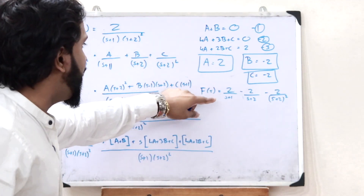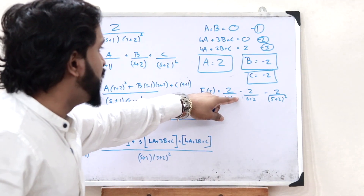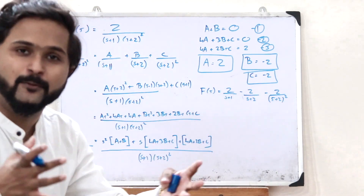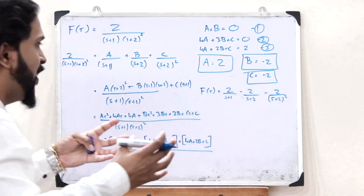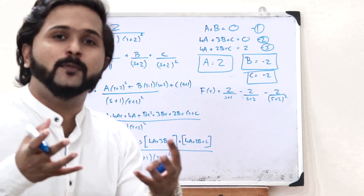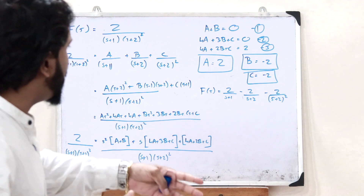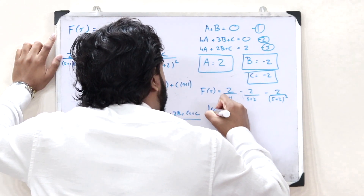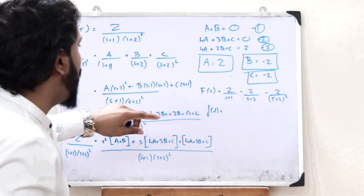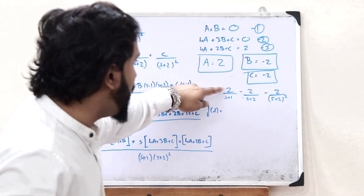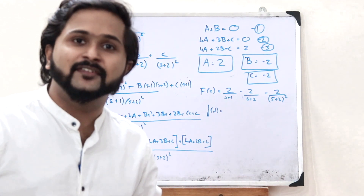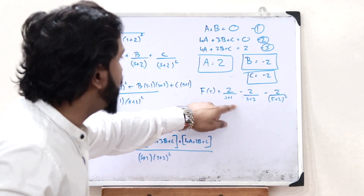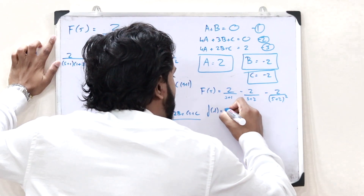The partial fraction expansion now becomes: F(s) = 2/(s+1) − 2/(s+2) − 2/(s+2)². Using the known inverse Laplace transform property that the inverse Laplace of 1/(s+a) is e^(−at), we can now find each term. With a = 1, the first term gives 2e^(−t).